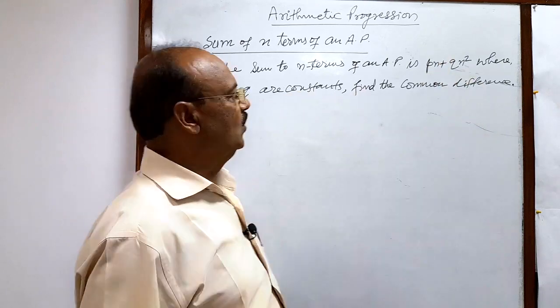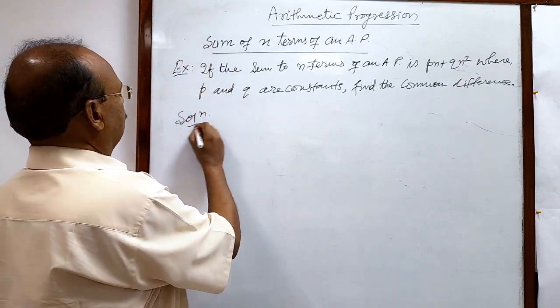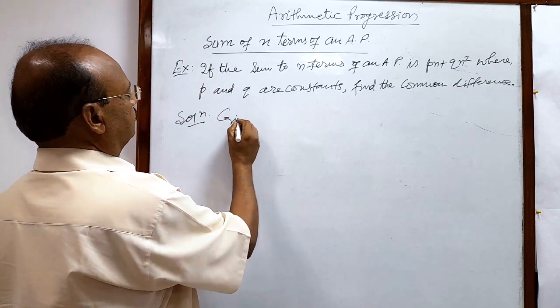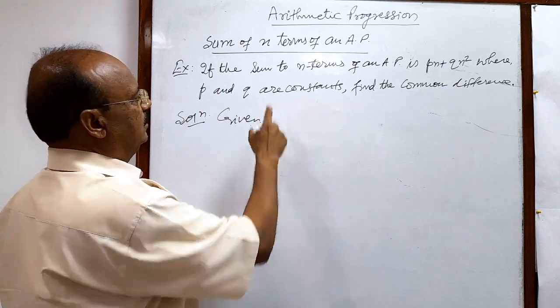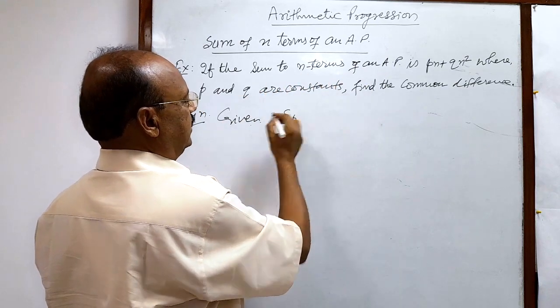Question is very interesting. So let us see the solution here. What is given? They are given sum of n terms of an A.P. This is denoted by Sn.